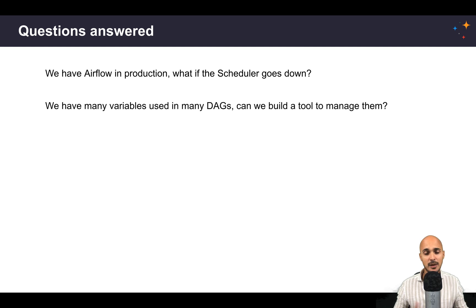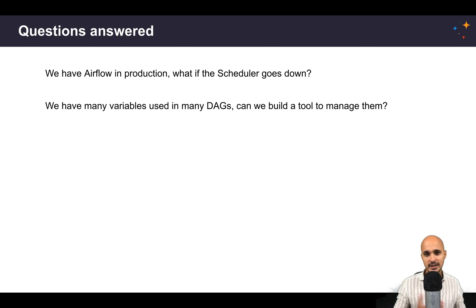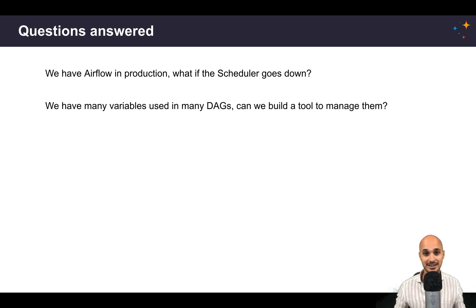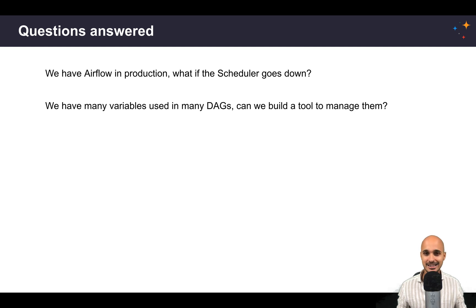Next, you might have many variables that you are using in different DAGs, and at some point you would like to know which variable is used in which DAG. But you can't do that right now with Airflow 2.0, neither with Airflow 1.10.x. So the question is: can you build a tool on top of Airflow in order to do that? Well, as we are going to see, with the new API, that's exactly what you can do.